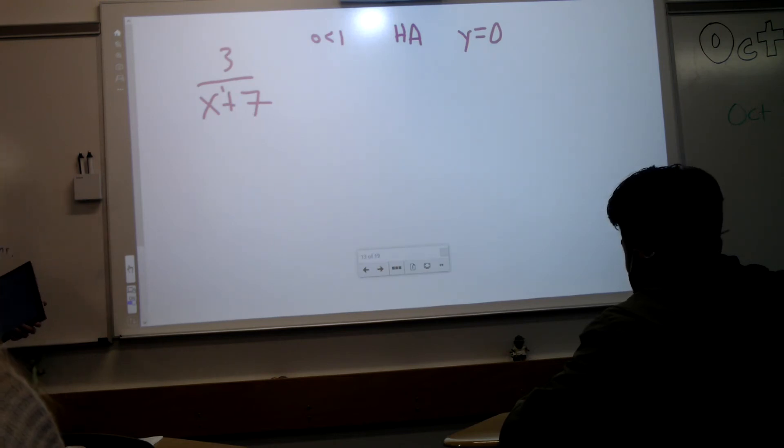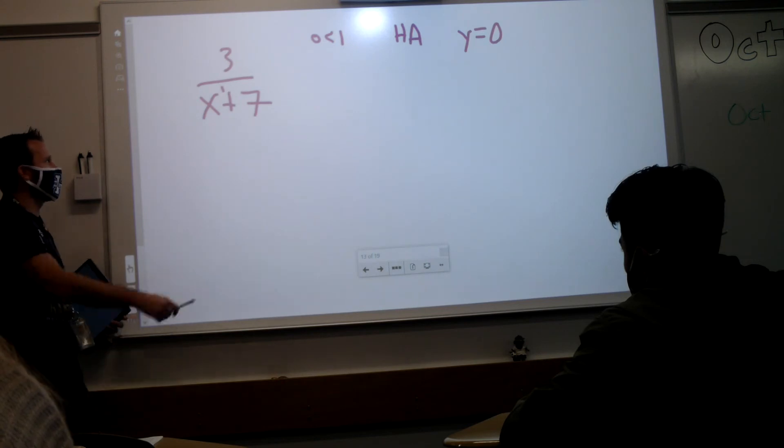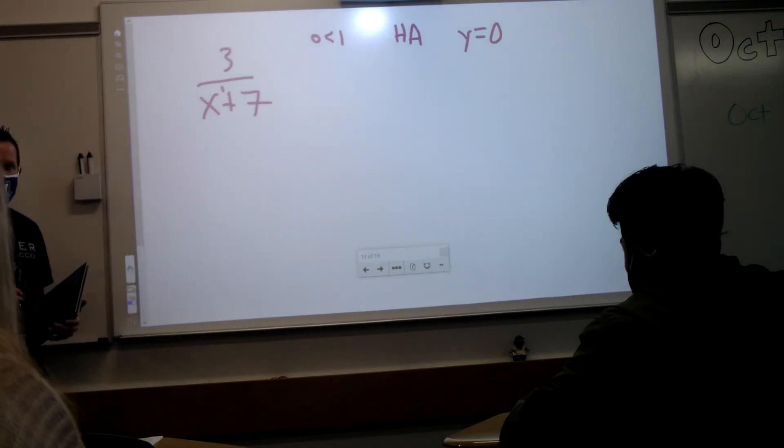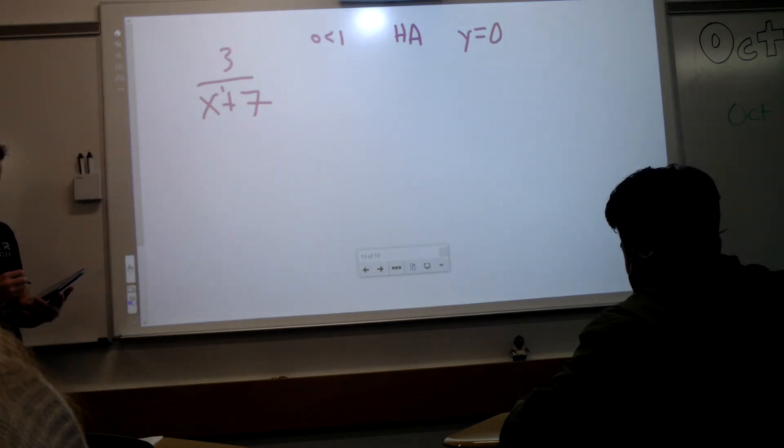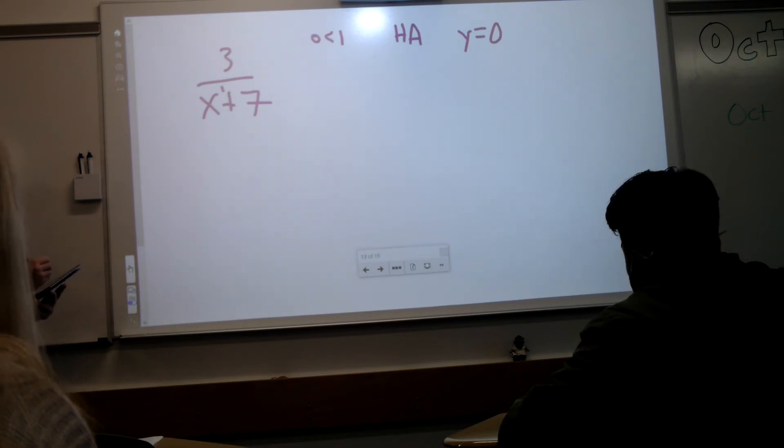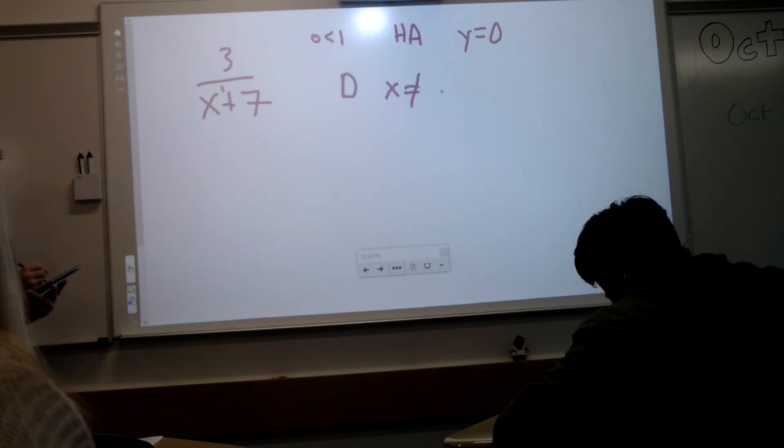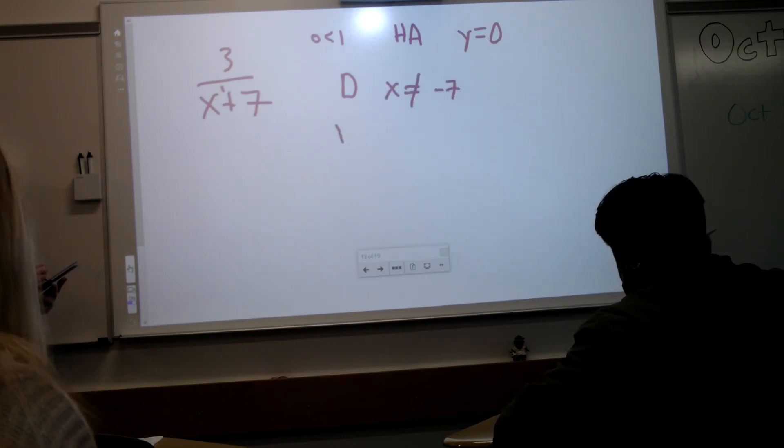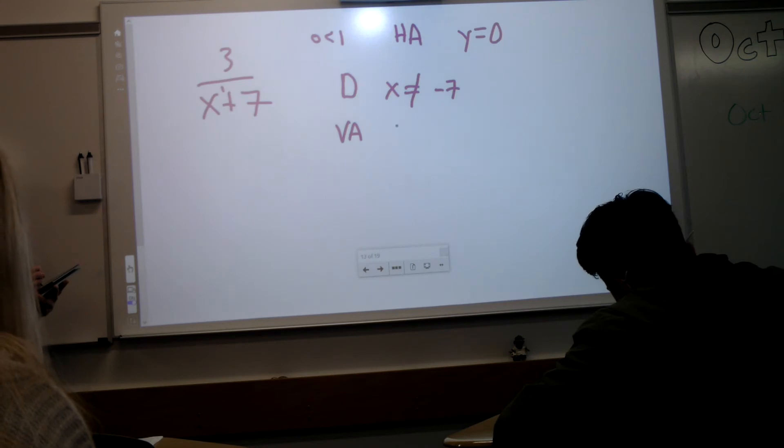Okay? Then I'm going to go to vertical asymptotes. What makes the bottom become zero? Negative seven. So I'm going to say x, so that's my domain actually. That was one of them. So x cannot be negative seven. Well, since it can't be negative seven, there's a vertical asymptote at negative seven. You with me so far? Is that okay?